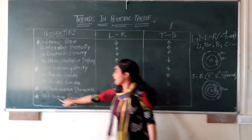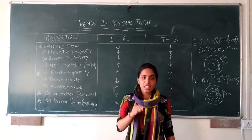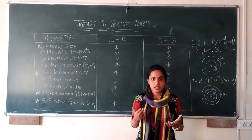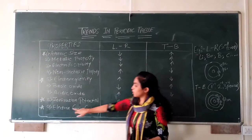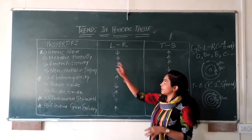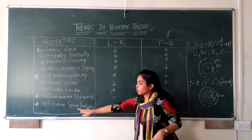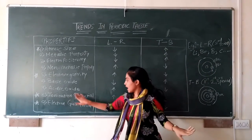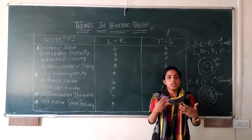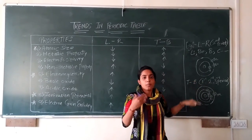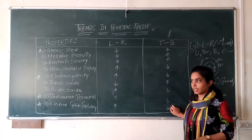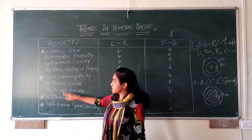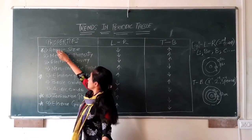Next is electron gain enthalpy, which is the energy related to gaining an electron. The trends are the same as ionization potential: from left to right, electron gain enthalpy increases, and from top to bottom it decreases. Key properties to remember are: electron gain enthalpy, ionization potential, electronegativity, electropositivity, and atomic size.